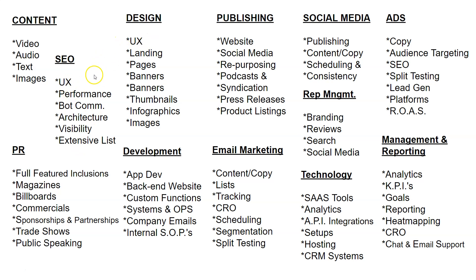Look at how all these things overlap with SEO. Design includes user experience, landing pages, banners, thumbnails, infographics, and images. With publishing, you've got publishing to your website, social media, and repurposing content. You can repurpose a video from video to audio to text to images — that's why video is key to content. However, it's trending that most people are listening to audio now because they're too busy to watch. Podcasts, syndication, press releases, product listings — it's all publishing, which goes hand-in-hand with SEOs because they're machines when it comes to publishing well and optimizing what they publish.